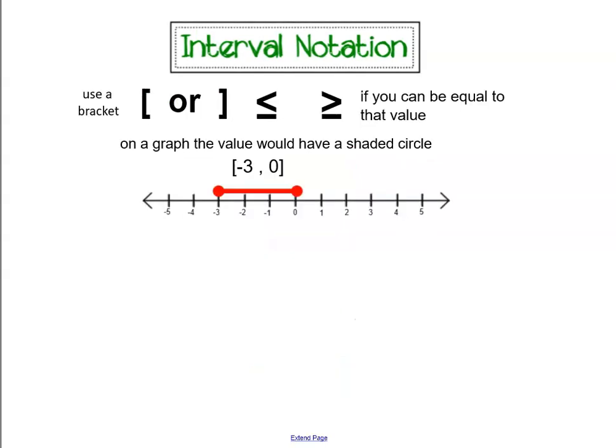This is the most common way that you start off learning interval notation, and it's with a span of numbers on a number line. Now you might remember, when you're graphing something on a number line, you can have what's called open circles or closed circles. A closed circle has an equal to sign, and an open circle does not.